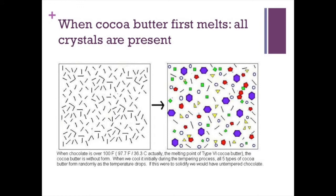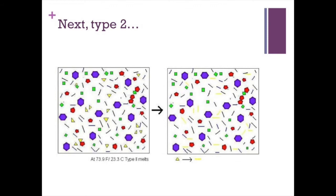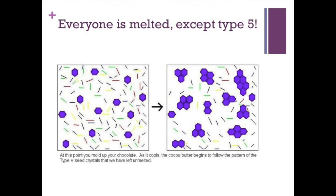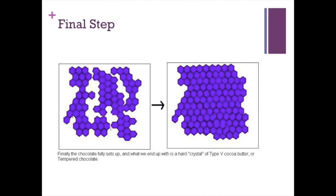When cocoa butter is initially melted, we get a big group of all five polymorphs. Let's go step by step. We start with untempered chocolate and heat it to 63 degrees Fahrenheit — type 1 has melted. By 73.9 degrees, type 2 has melted as well. This goes on until only type 5 is left. At this point, we start to cool down our chocolate. Type 5 seed crystals are the only ones left that have not melted. The crystallization starts, and type 5 crystals begin to link together, forming a crystalline lattice. Now the chocolate has fully hardened and is in its most stable and tempered form.